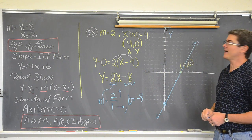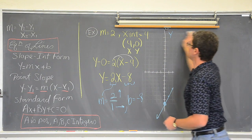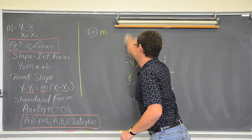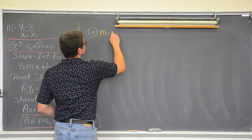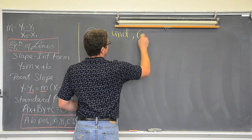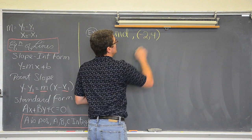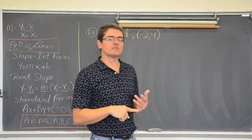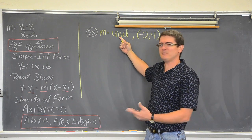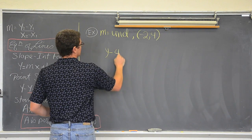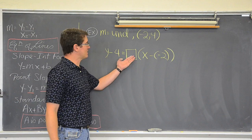I have time for another one. Let's do a weird one. Let's say that my slope was undefined and the point that I am going through is negative 2, 4. I just told you that to find the equation of a line you need a point and a slope — I have a point, but my slope is undefined. How am I supposed to plug into the point-slope form if I don't have a slope?